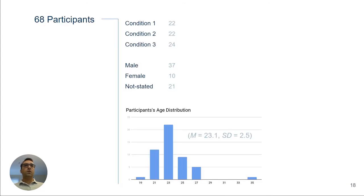We had 68 participants. Each were randomly assigned to one of the conditions. Among them, there were 37 males, 10 females, and 21 participants who didn't reveal their gender. The average age of the participants was 23 years old with a standard deviation of two and a half years.